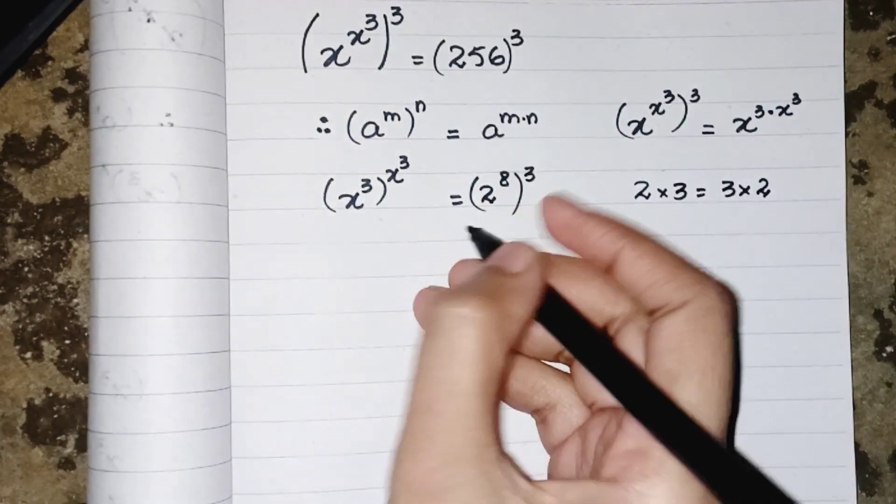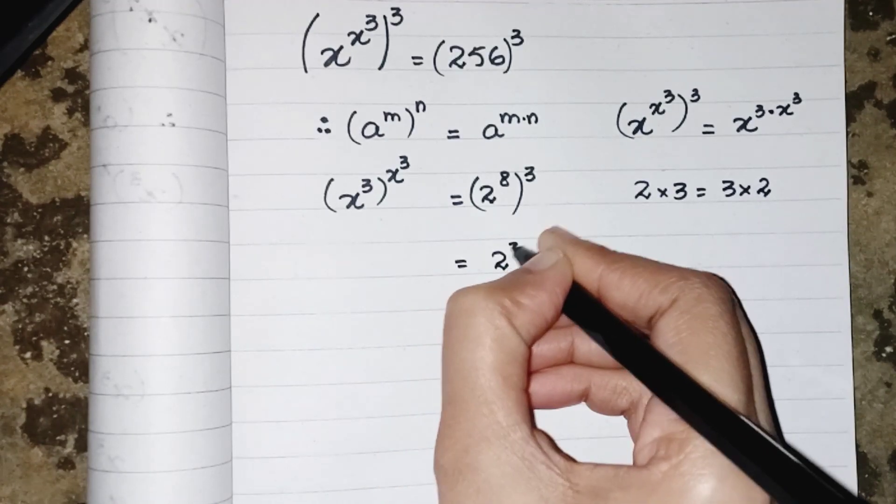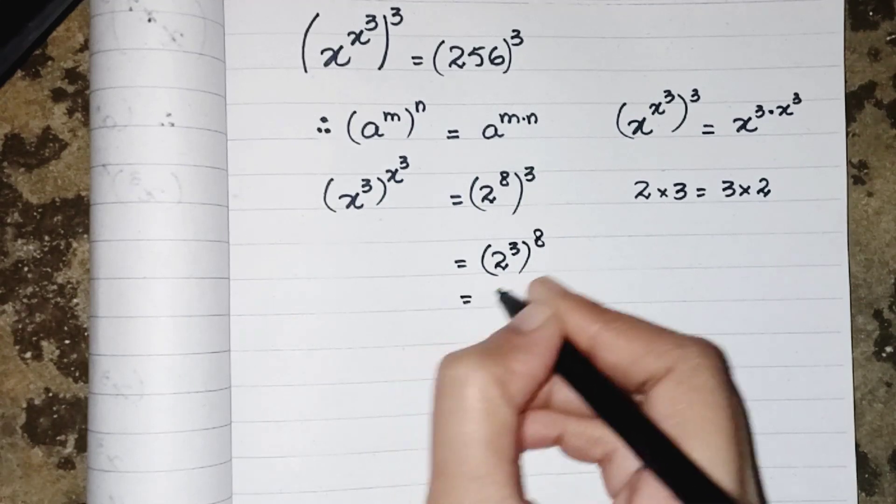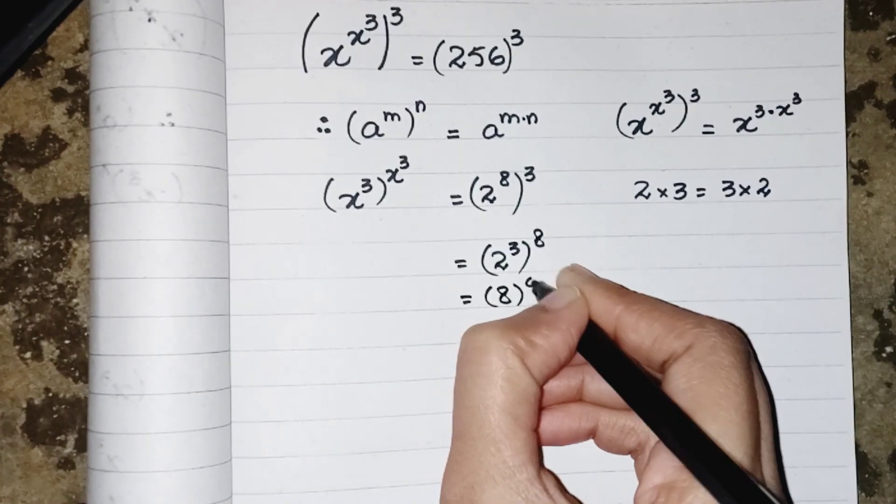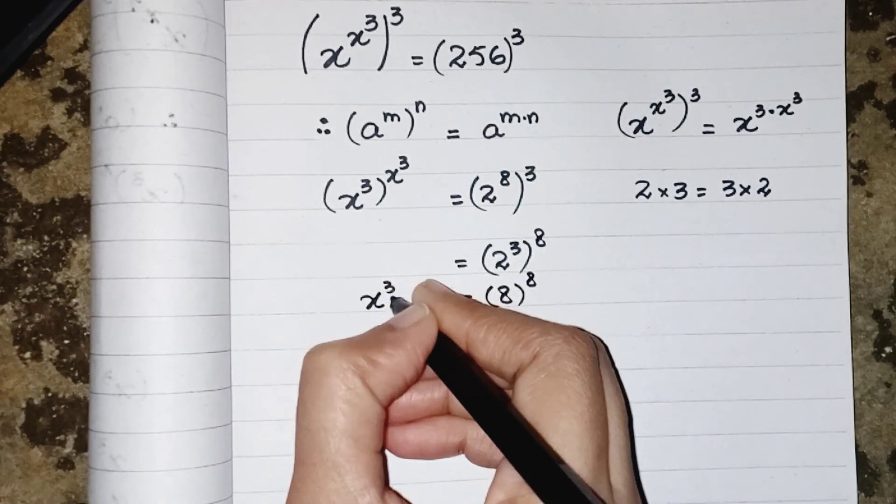Where 2 to the power 3 will result as 8, and we have over power as 8, so it will be equal to our given question where the bases and powers both are same.